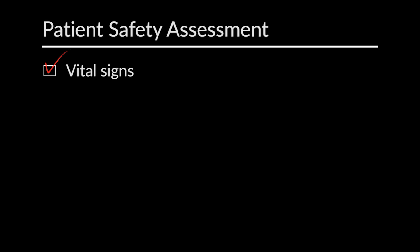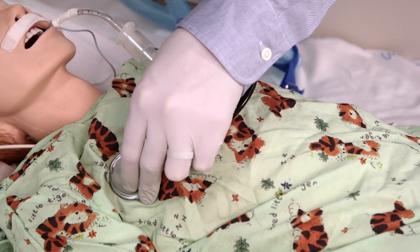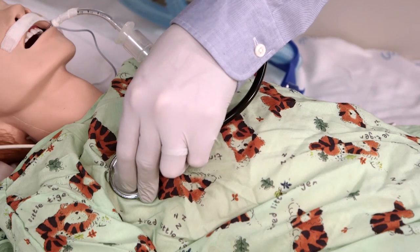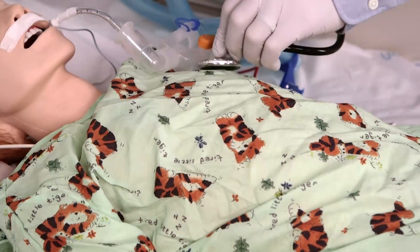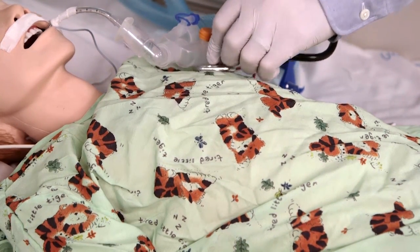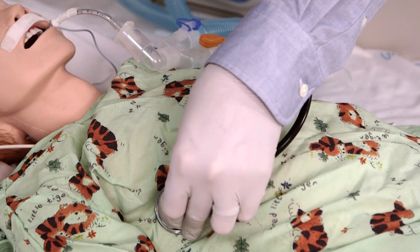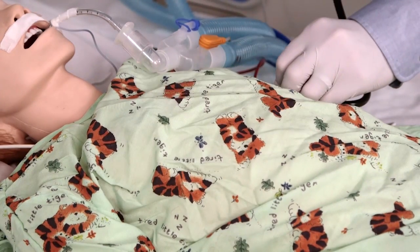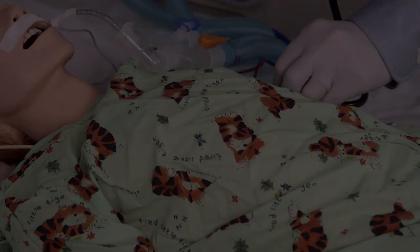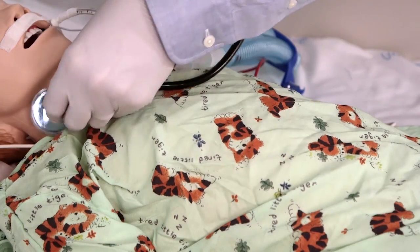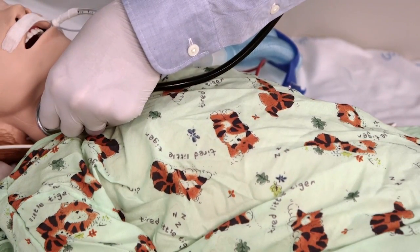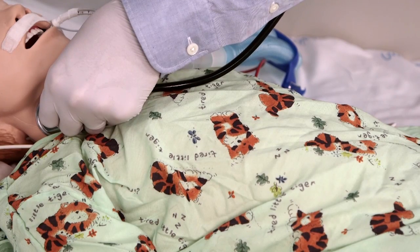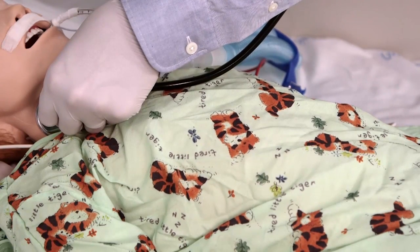We will then move on to the patient's breath sounds to assess if there are any adventitious breath sounds that may be contributing to instability. When assessing a patient's breath sounds, we should auscultate similar regions on opposite sides for comparison. While we have our stethoscope on, we should also auscultate the neck to listen for a leak around our endotracheal tube cuff and assist us in our cuff management.